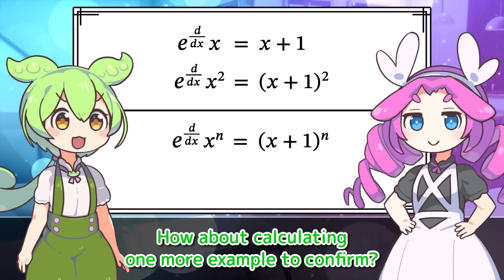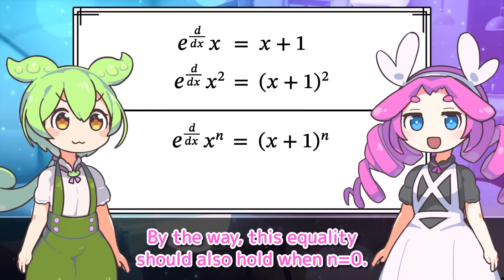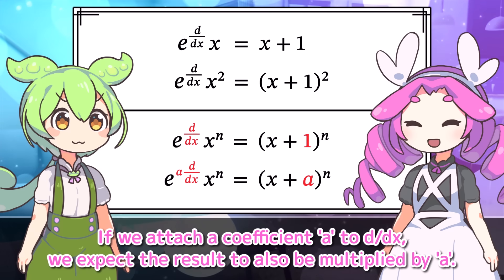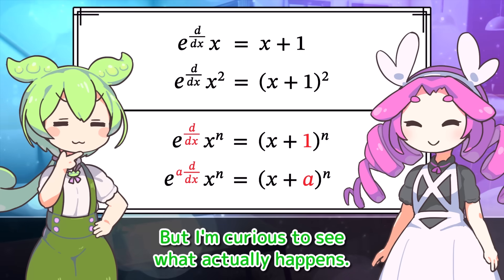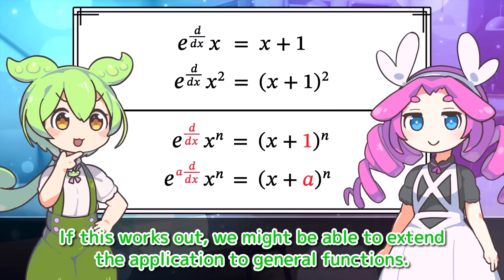Is that really true? How about calculating one more example to confirm? No, we should proceed. By the way, this equality should also hold when N equals 0. Furthermore, since D by DX corresponds to 1, if we attach a coefficient A to D by DX, we expect the result to also be multiplied by A. That's a bold prediction. But I'm curious to see what actually happens. If this works out, we might be able to extend the application to general functions.